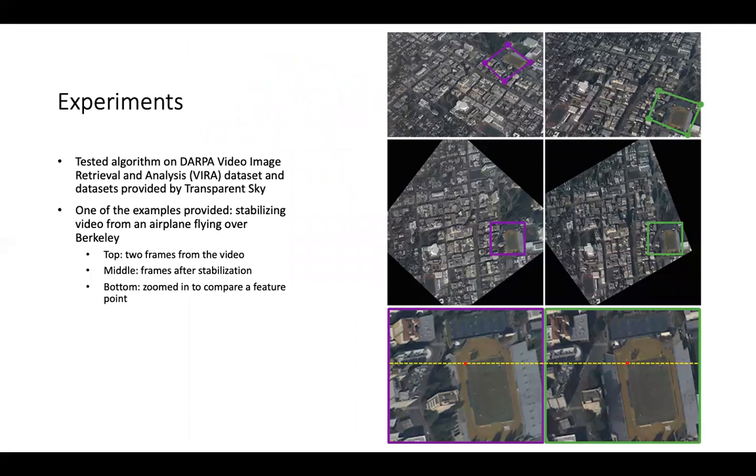The paper also shows three experiments that they did with different datasets from the DARPA Video Image Retrieval and Analysis dataset, and also from Transparent Sky dataset. However, in the interest of time, I'll just cover one of the examples. In this example, this is a dataset of a video of a plane flying over Berkeley. As you can see, this is two of the frames from that video at the top. The perspective of the camera distorts the actual area that we want to look at, the area of interest—that's this purple box and this green box.